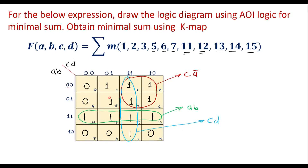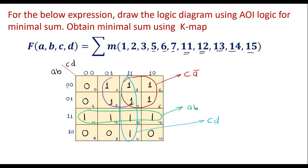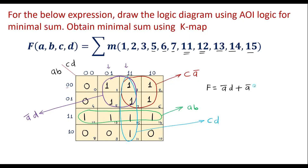The remaining ones can be grouped. A quad is possible here: this one, this one, this one, and this one together make one quad. It covers these two columns; the common factor is 1 with respect to D, giving one term D. It also covers these two rows; the common value is 0, that is A bar. So the term is A bar D. Therefore, the simplified expression is F equals A bar D plus A bar C plus AB plus CD.